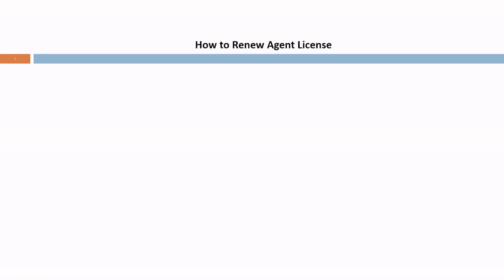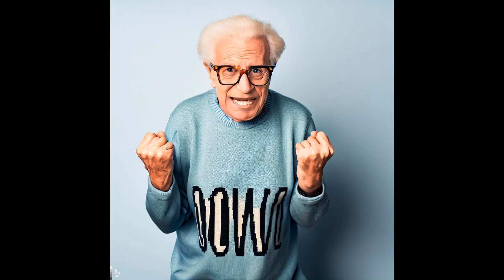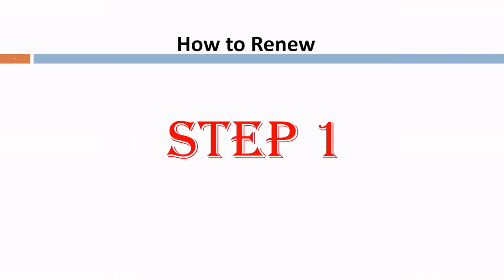As per Nepal Bima Pradhikaran, the charge for renewing an agent license for another three years is only Rupees 200. This will renew your license till April 14, 2026, which means you don't have to renew your license for another three years. I believe that's a really big change.